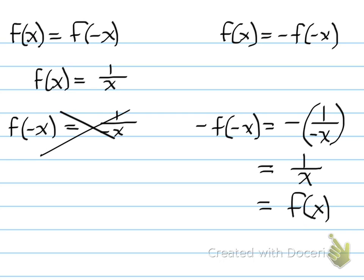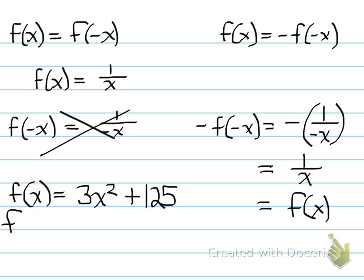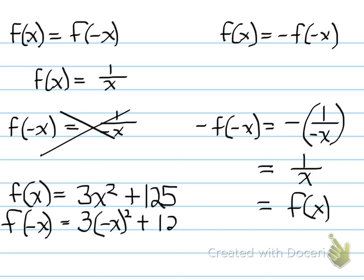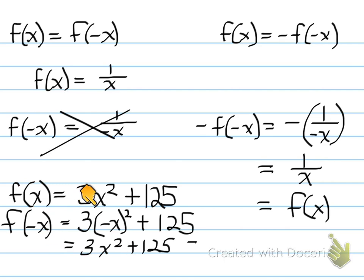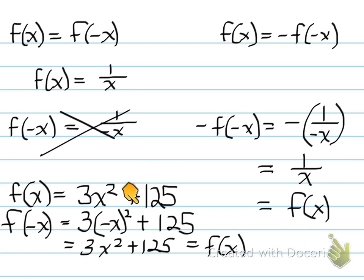Let's look at another example: f at x equals 3x squared plus 125. We test for even first by plugging in f at negative x. We substitute negative x for x in 3x squared plus 125 and simplify the expression to get 3x squared plus 125, which is the original function. Because the result equals f at x, this function is even. We always test for even first, and if it is even, we can stop.